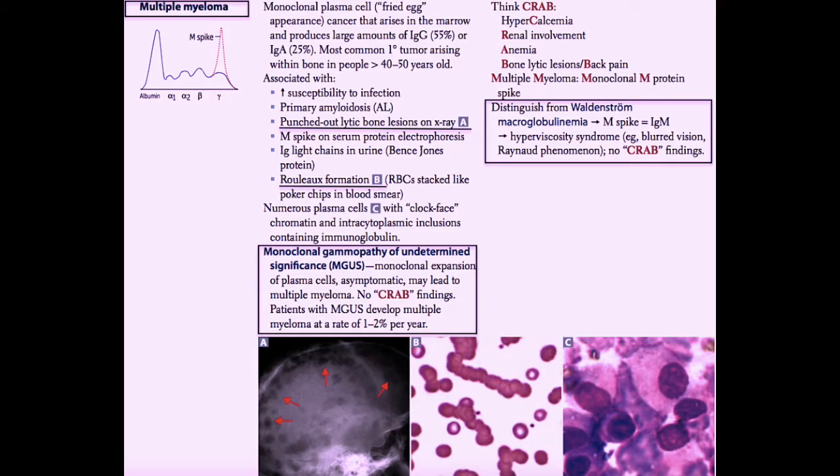The other reason that you're going to see these punched out bone lesions is because the tumor cells in multiple myeloma actually release something called osteoclast activating factor. As the name implies, osteoclast activating factor activates osteoclasts, which activates bone breakdown. So those are the reasons you're going to see these punched out lytic bone lesions on x-ray in a patient with multiple myeloma.